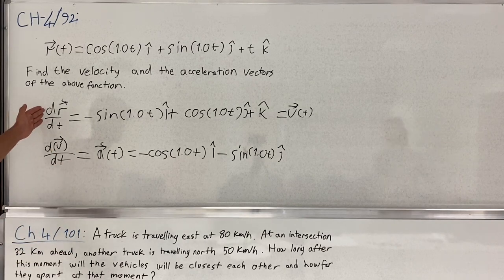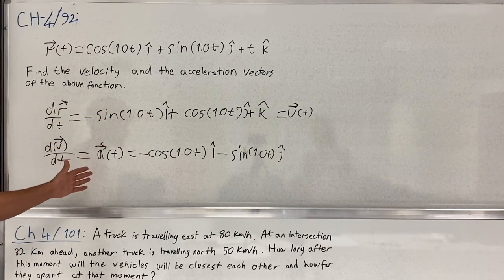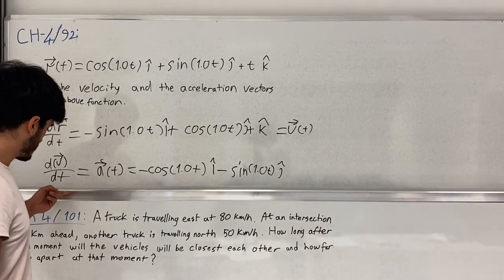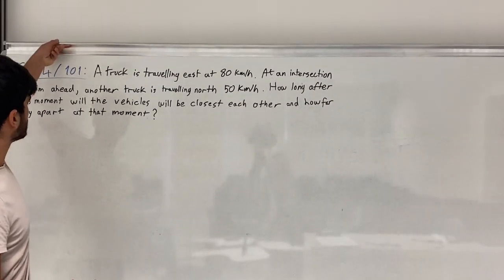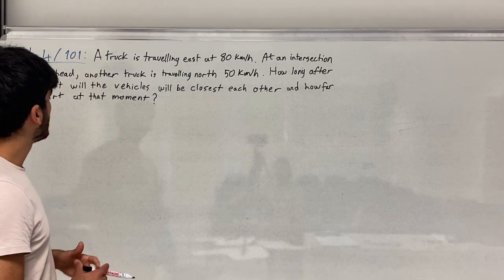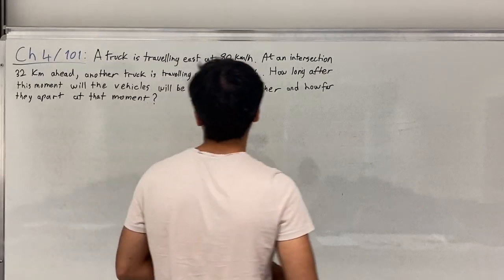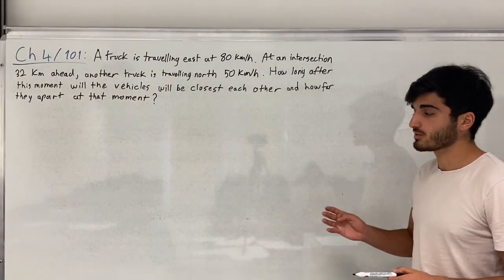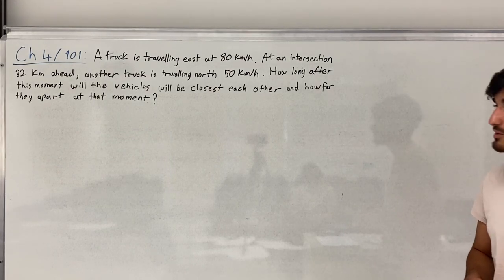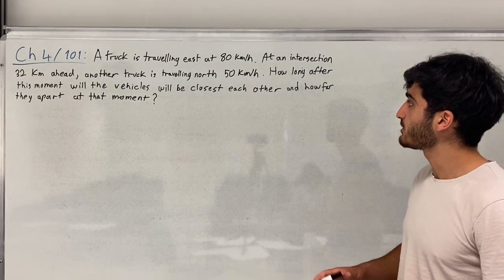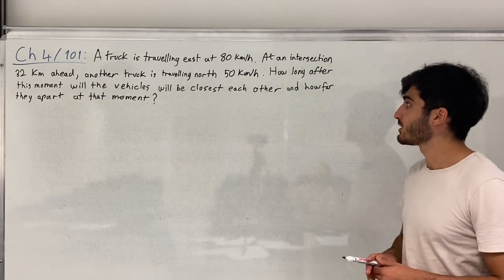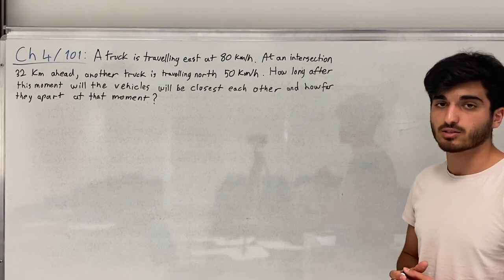So we found the velocity vector and the acceleration vector of the given position vector. Now let's move on to the second question. This question involves relative motion. The question states: a truck is travelling east at 8 km/h; at an intersection 32 km ahead, another truck is travelling north at 50 km/h.